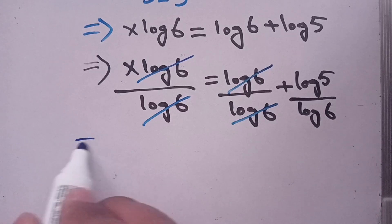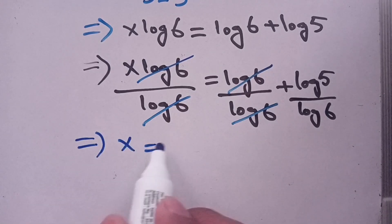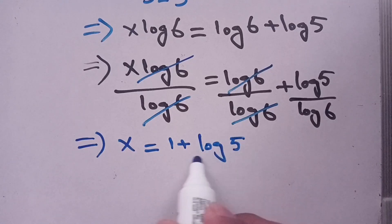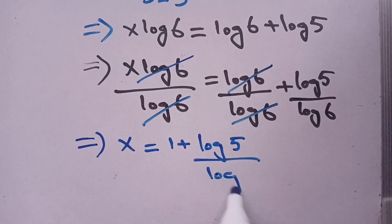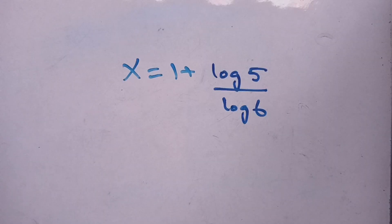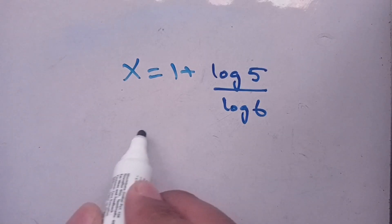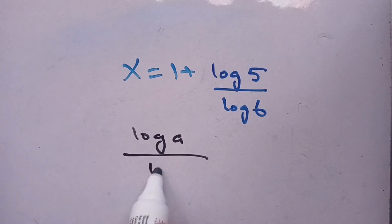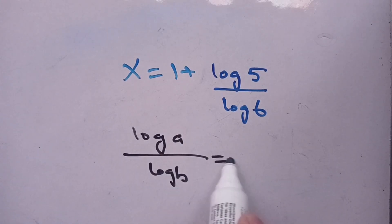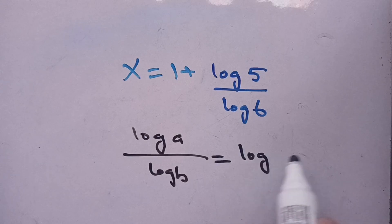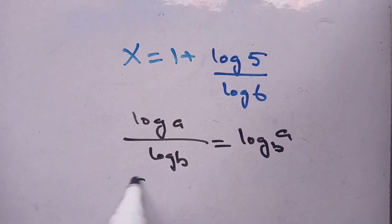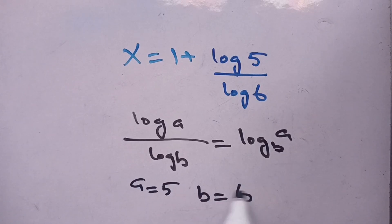Our remaining part is: x is equal to 1 plus log of 5 divided by log of 6. We use the logarithm property: log of a divided by log of b is equal to log of a with base b. Here a is equal to 5 and b is equal to 6.